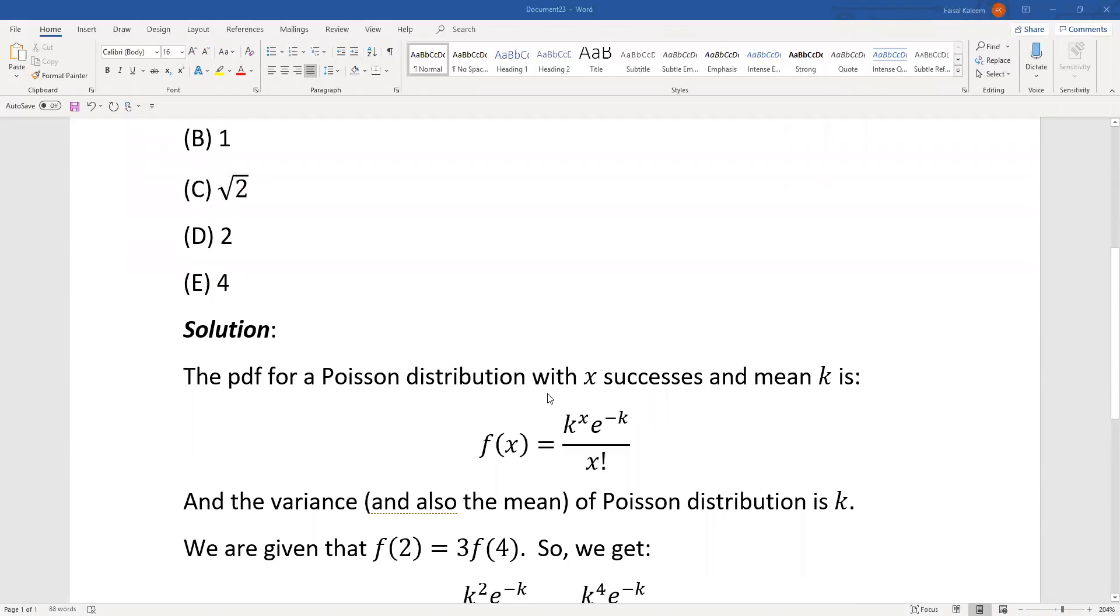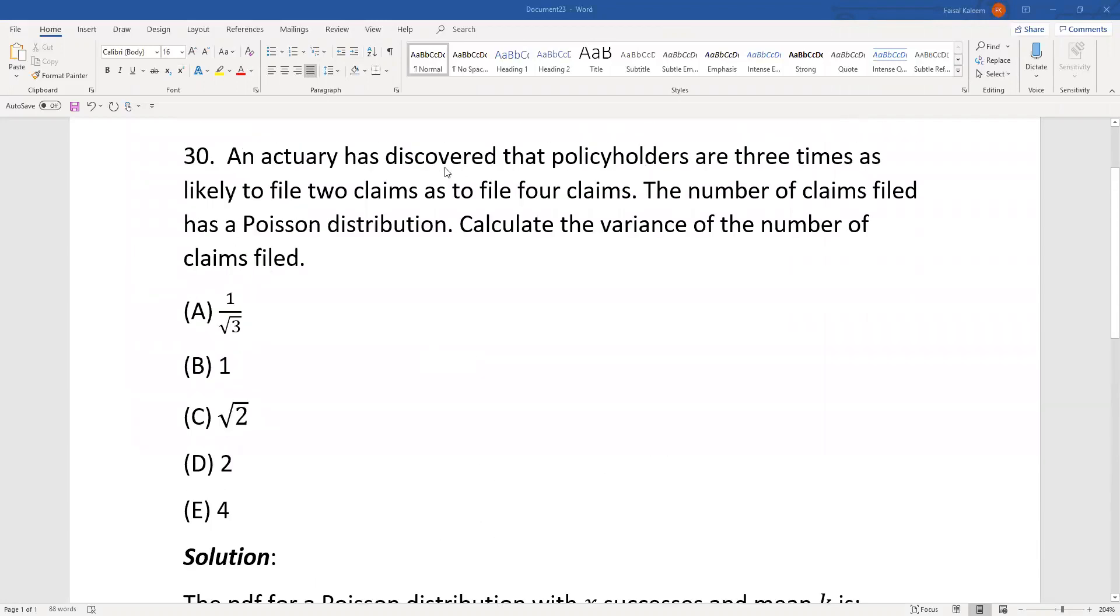The given condition is that you are three times as likely to file two claims as to file four claims.